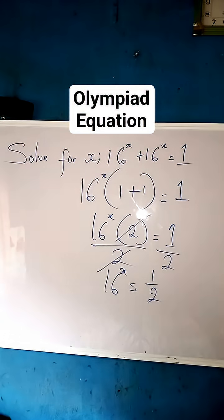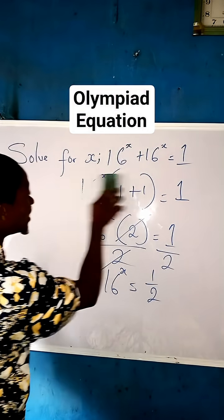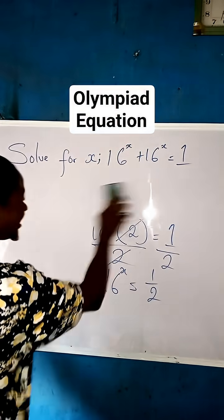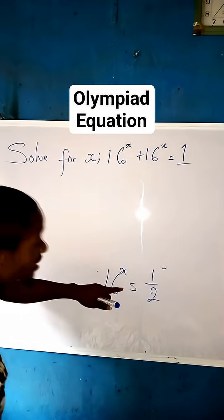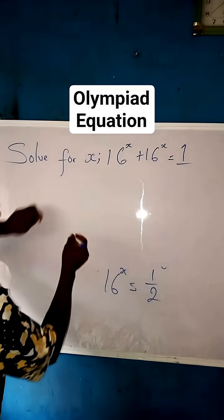So these two we cancel, these two, we are left to 16^x = 1/2. Hope you are following. You will see the magic. Now what you are going to do next is we can say that we have this 16^x equal to what? 1/2.